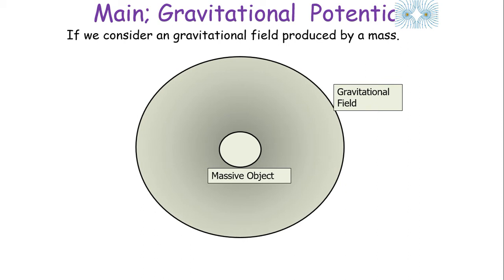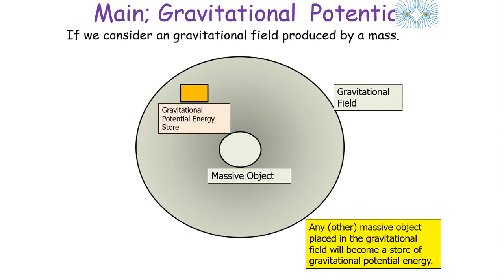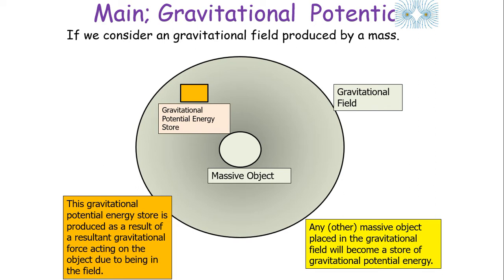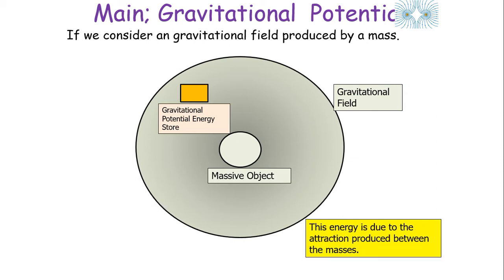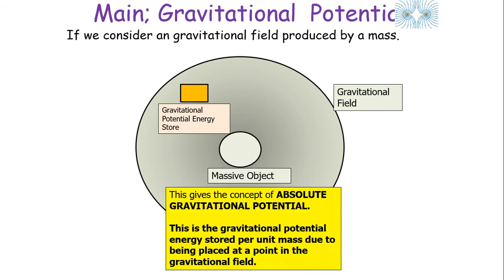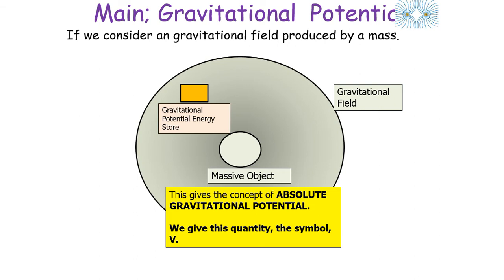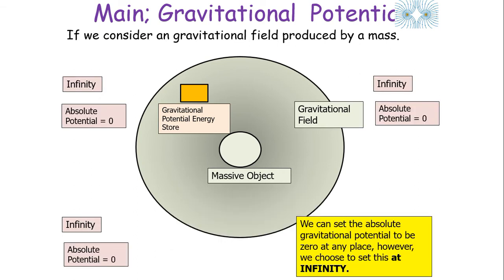If we consider a gravitational field produced by a mass, any other massive object placed in that gravitational field will become a store of gravitational potential energy. This energy store is produced as a result of the resultant gravitational force acting on the object due to being in the gravitational field — it's due to the attraction between the masses. This gives us the concept of absolute gravitational potential: the gravitational potential energy stored per unit mass due to an object being placed at a point in the gravitational field, given the symbol V. We can set the absolute potential to be zero at any location, but by convention we choose to set this at infinity.